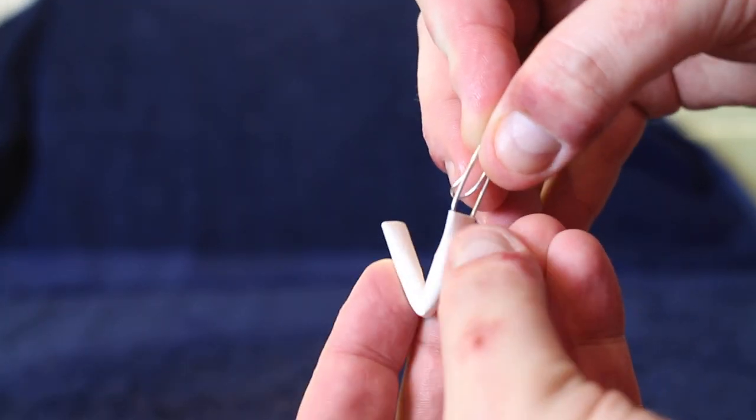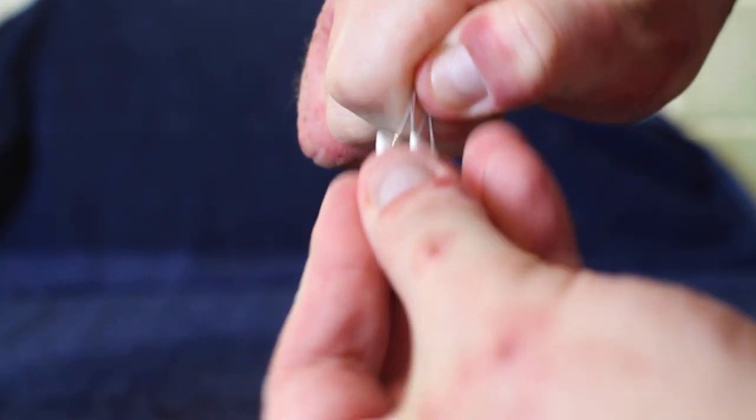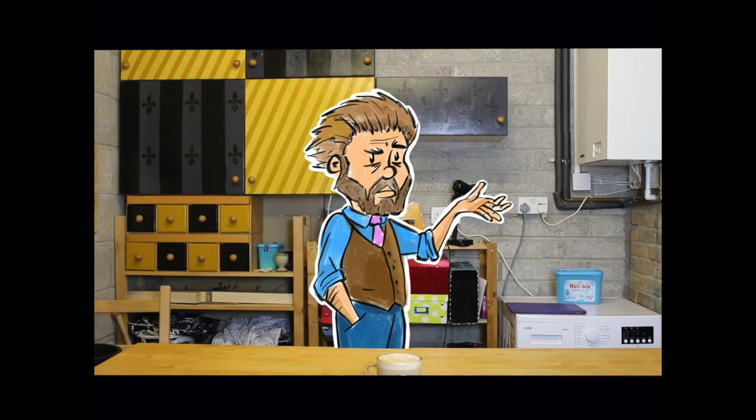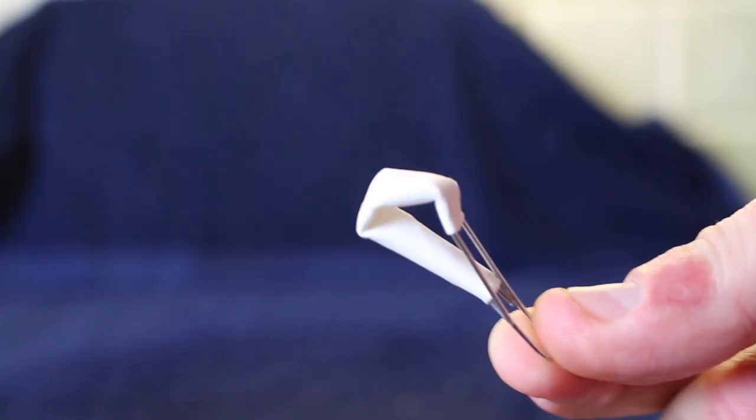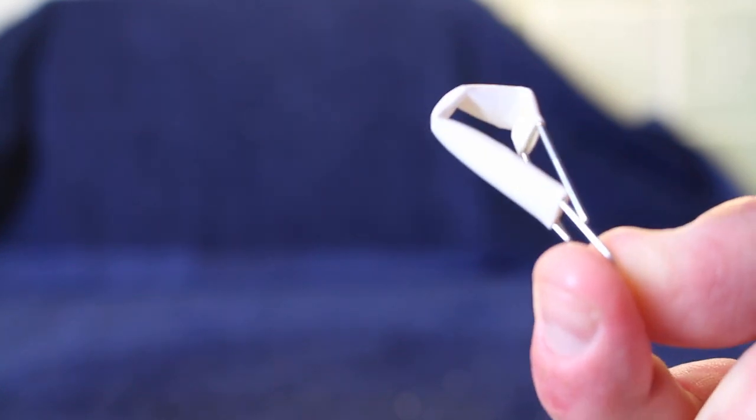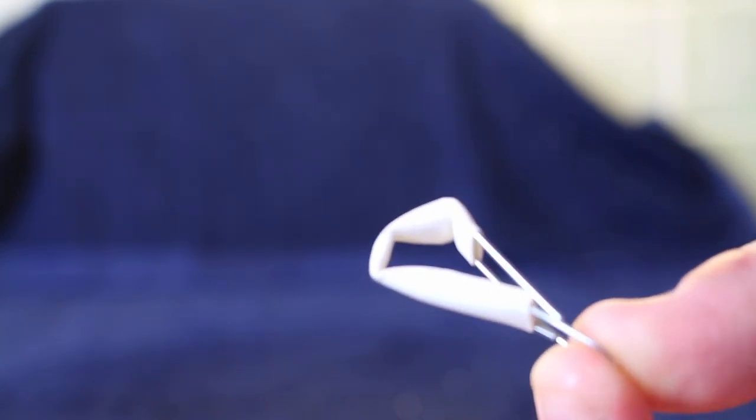What you need for this are a straw, preferably a paper straw rather than a plastic straw, a bottle of water and a paperclip. With these we're going to make what's called a Cartesian diver. So how this works is we bend the straw in half, we put the two ends on the paperclip. What we want is the paperclip at the bottom, keeping the weight down, and what we actually get then is an air bubble in the straw.